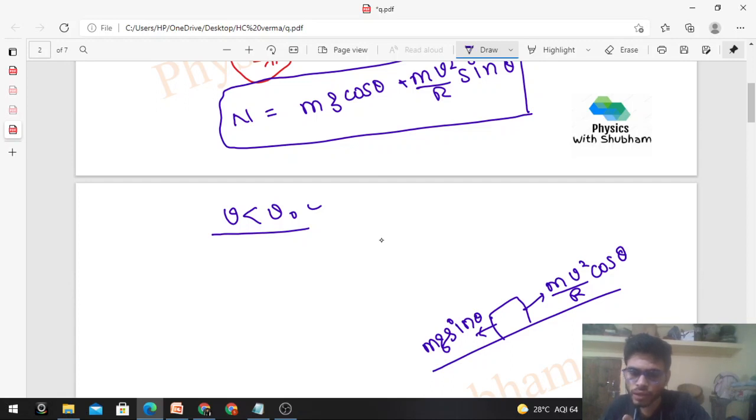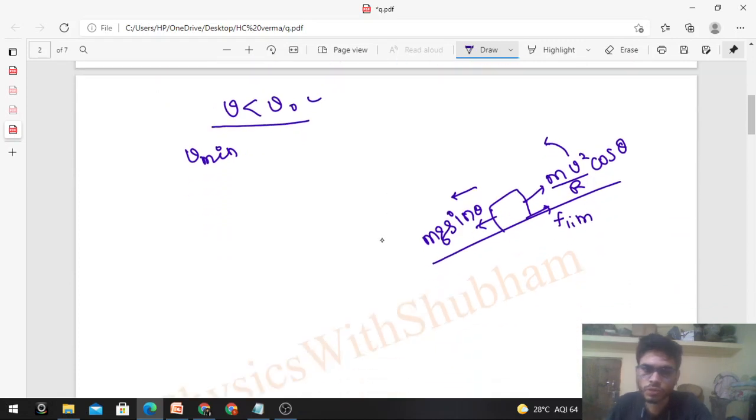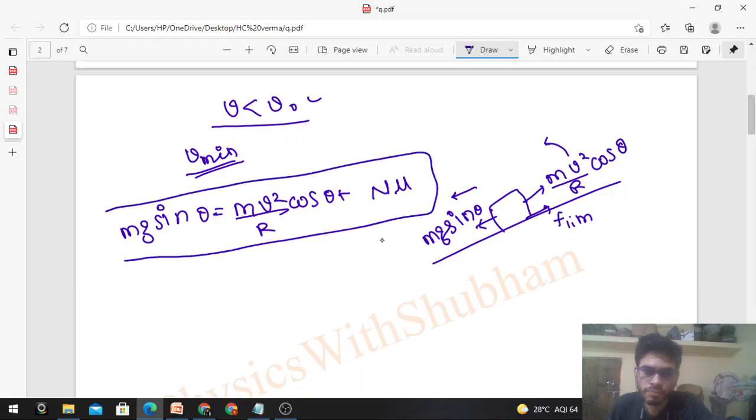When you say banked for vehicles going at 36 km per hour, it means mg sin theta equals mv square upon r cos theta, where the speed is v-naught. If it moves at this speed, net force on the car is zero. From this, m cancels, so tan theta equals v-naught square upon rg. From this you can find the angle at which the road is inclined, because v-naught is given as 36, r is given as 20, and g you can take as 10. From this you get the inclined angle - how much the road is banked.